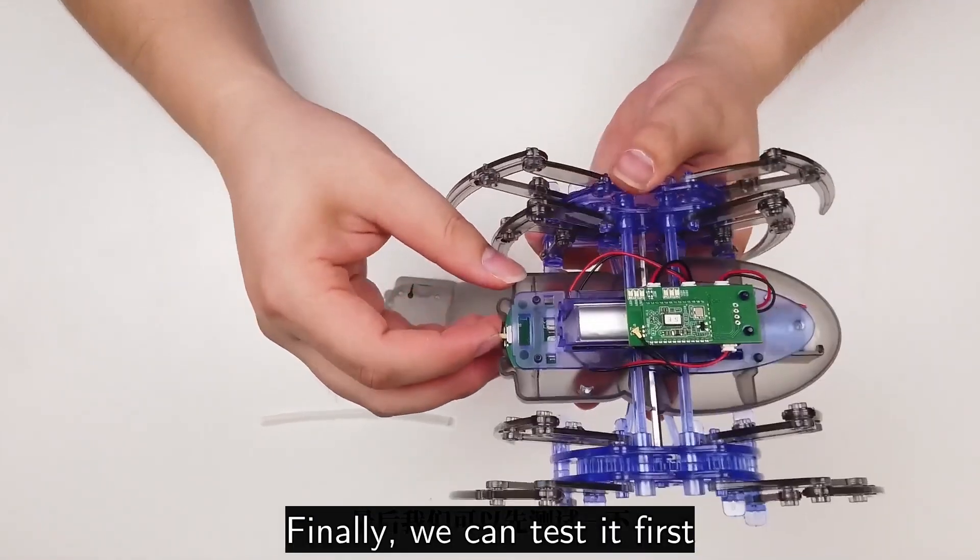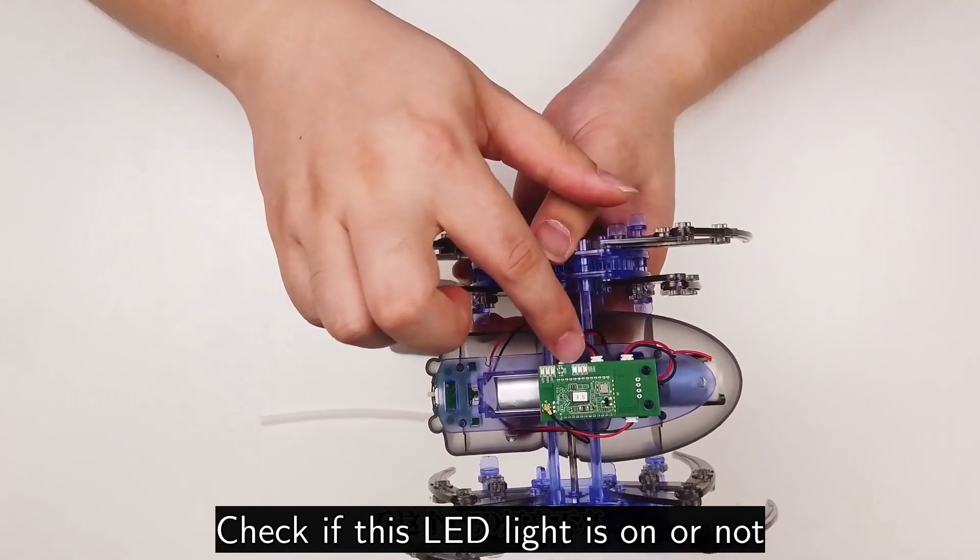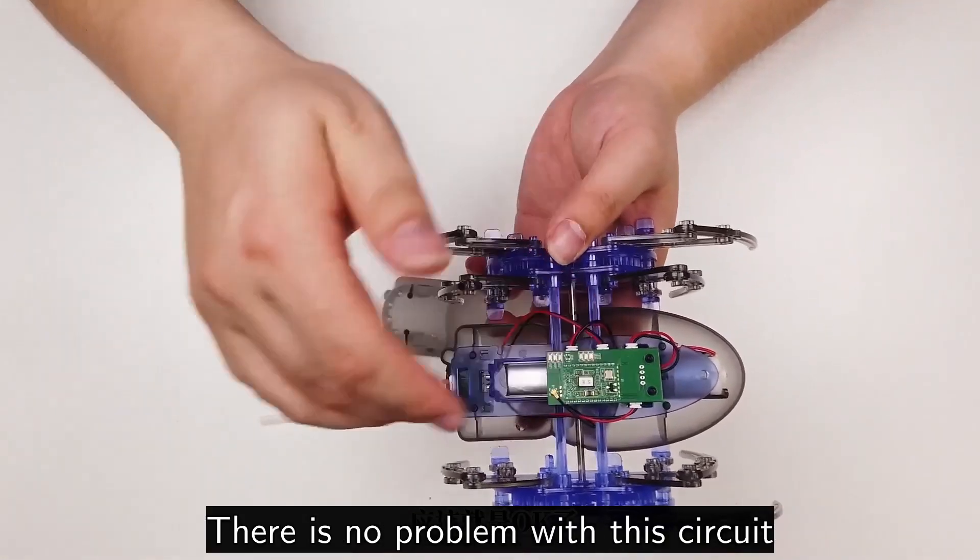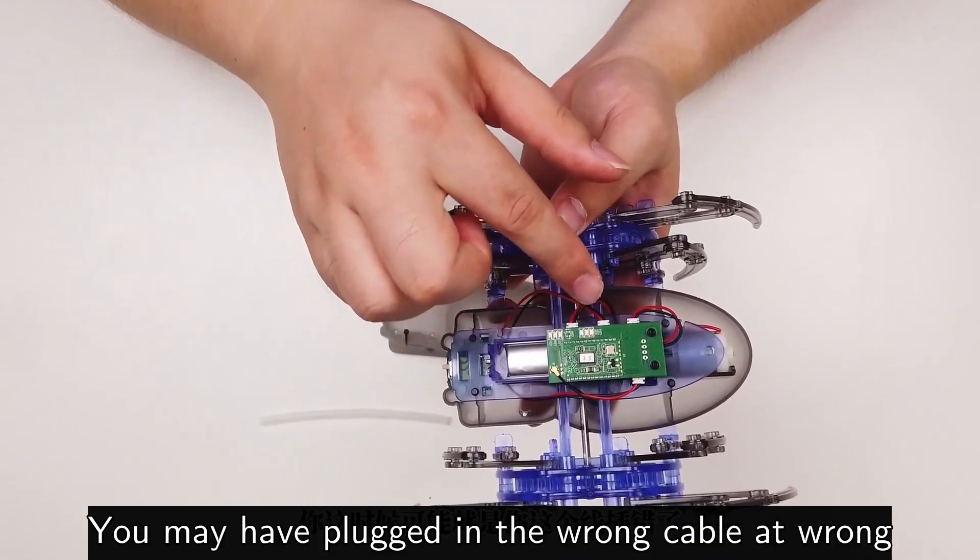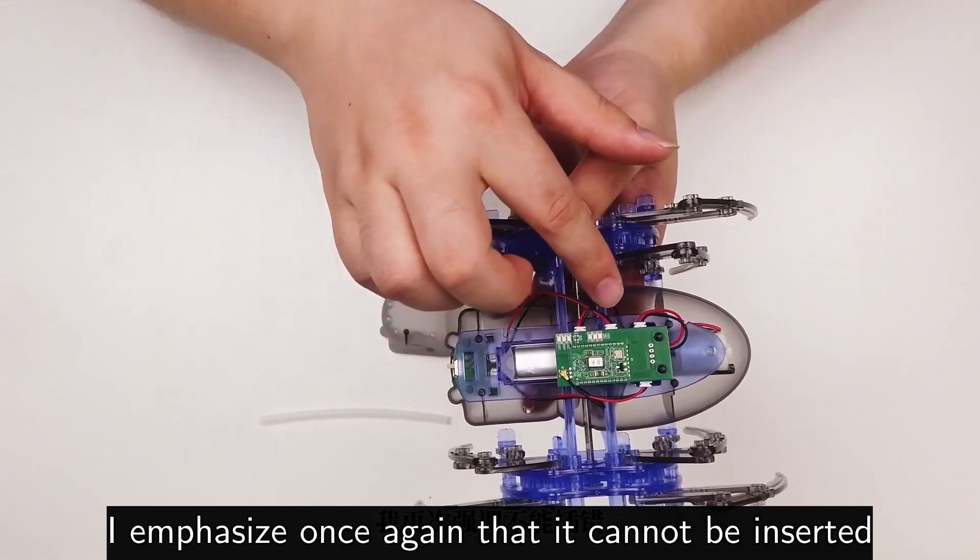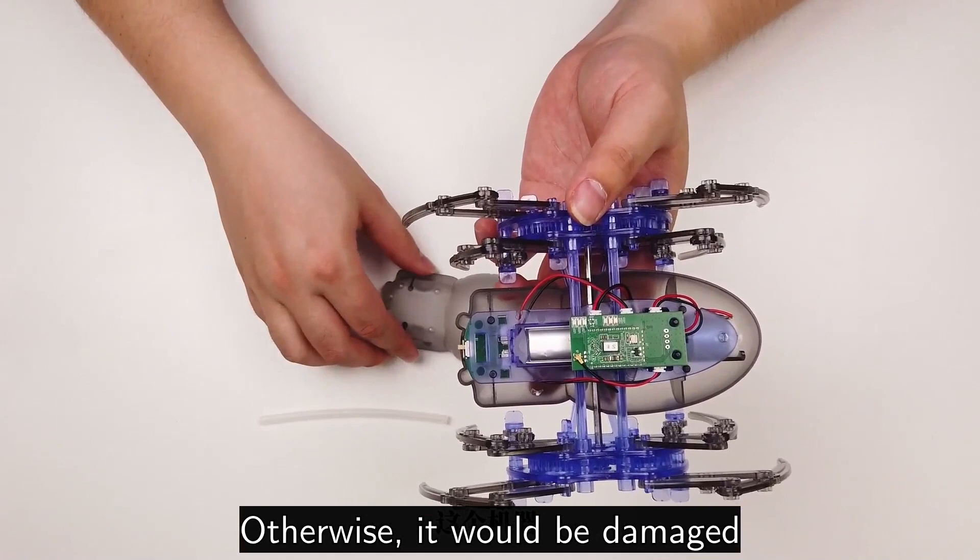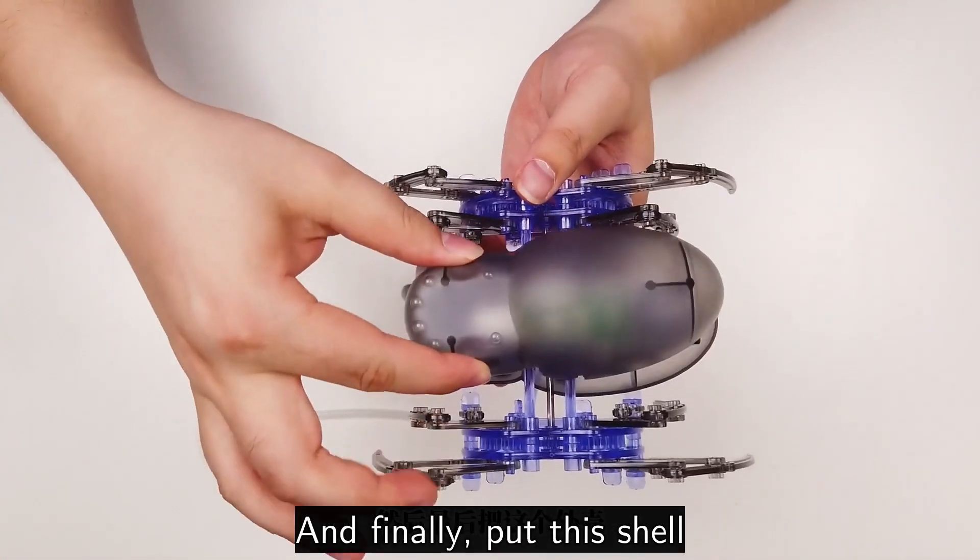Finally we can test it first. Turn on this power switch, check if this LED light is on or not. If it turns on, it should be okay. There is no problem with this circuit. If it doesn't light up, you may have plugged in the wrong cable at wrong position. I emphasize once again that it cannot be inserted incorrectly, otherwise it would be damaged. Now we can turn off the switch first and finally put this shell.